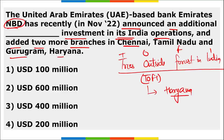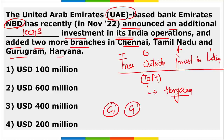Recently, NBD — a bank of UAE — announced an additional 100 million US dollar investment in India. They will be opening two more branches in Chennai, Tamil Nadu, and Gurugram, Haryana. Currently they have one branch in Mumbai, Maharashtra.